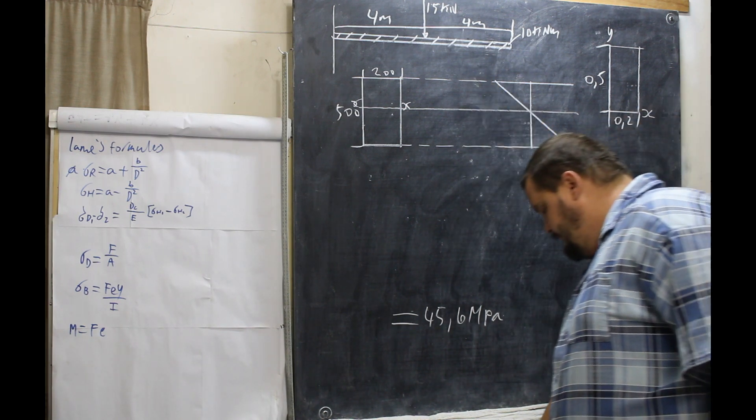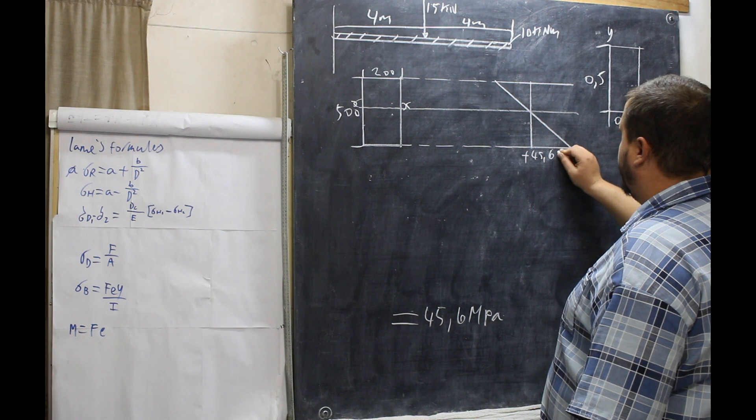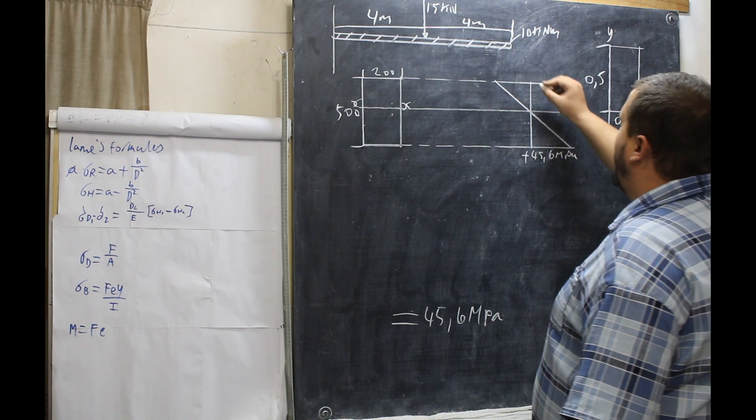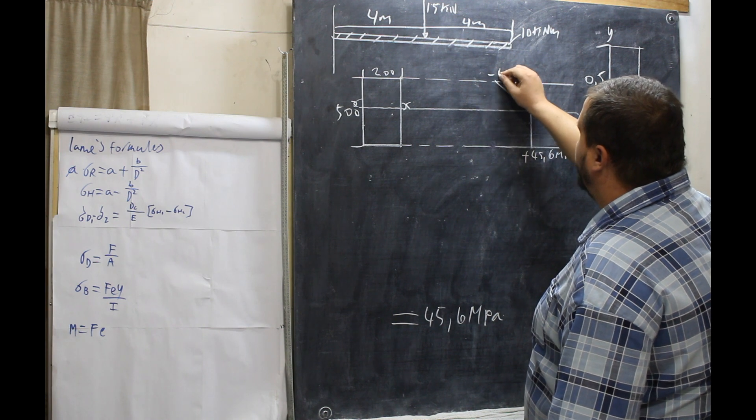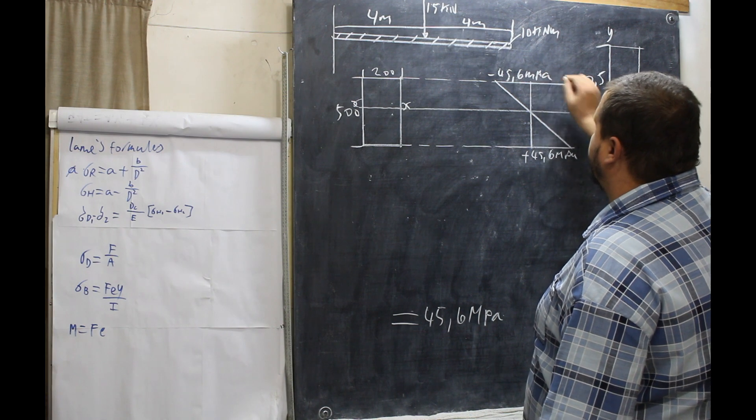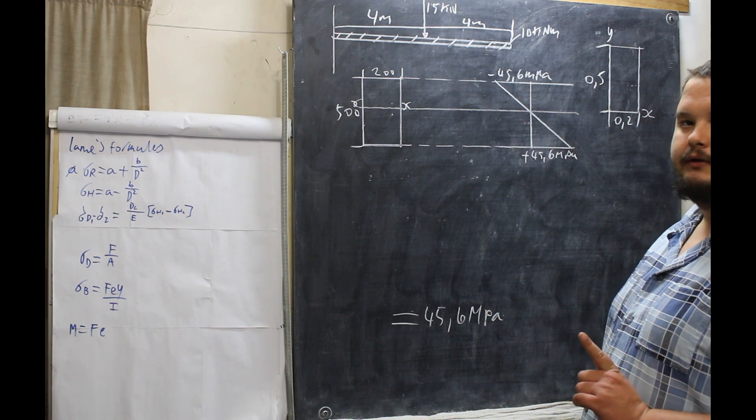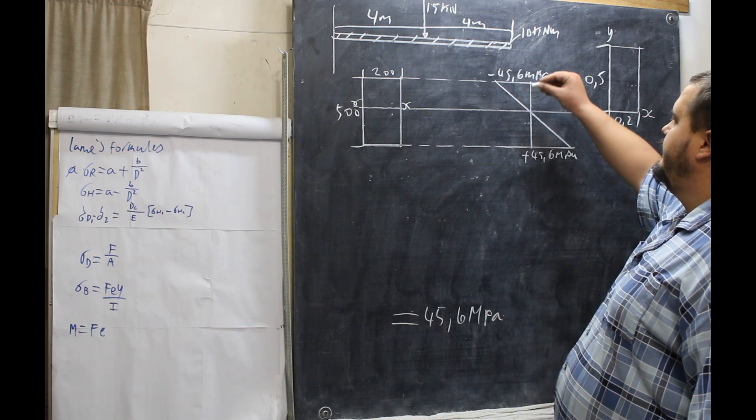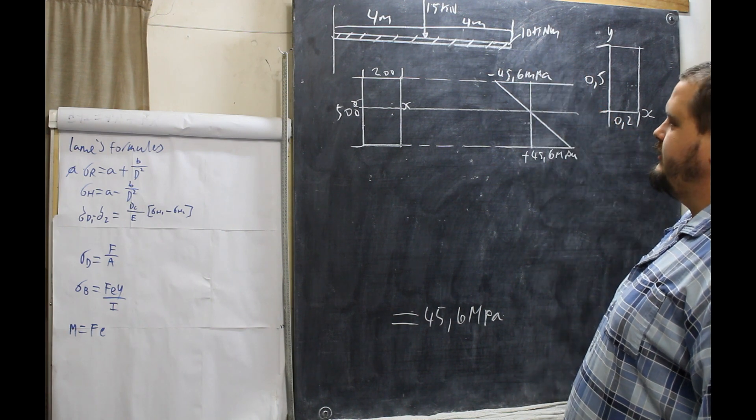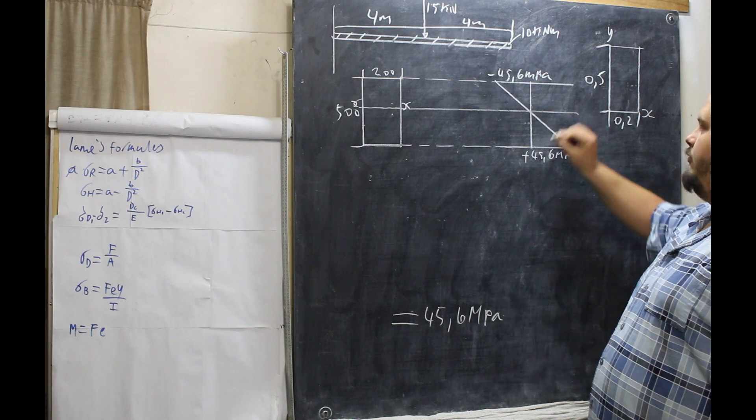Now this is positive 45.6 megapascals. And this is negative 45.6 megapascals. And that is how you draw your stress diagram. Very quick, very simple, and to the point. Sometimes, depending on your shape of your beam, these two numbers will be different. But because it's rectangular and one side reflects the other, they will be exactly the same.